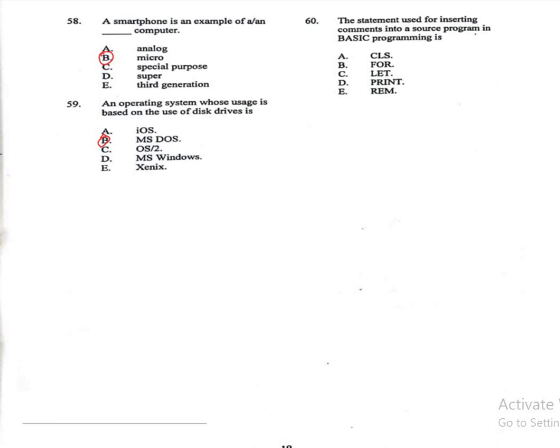Question 60: The statement used for inserting comments into a source program in BASIC programming is — A: CLS, B: FOR, C: LET, D: PRINT, E: REM. The correct answer is E, REM. REM stands for remark and is used to insert comments in BASIC.